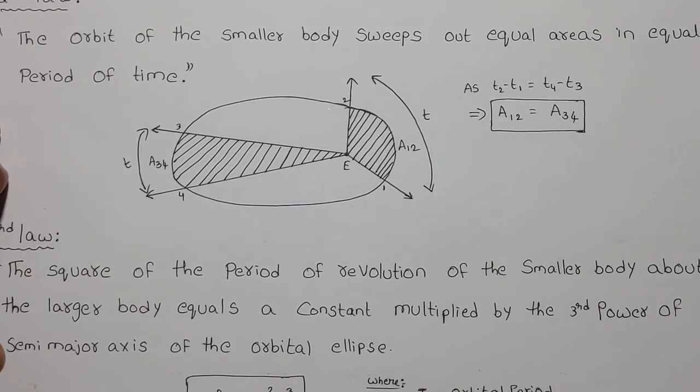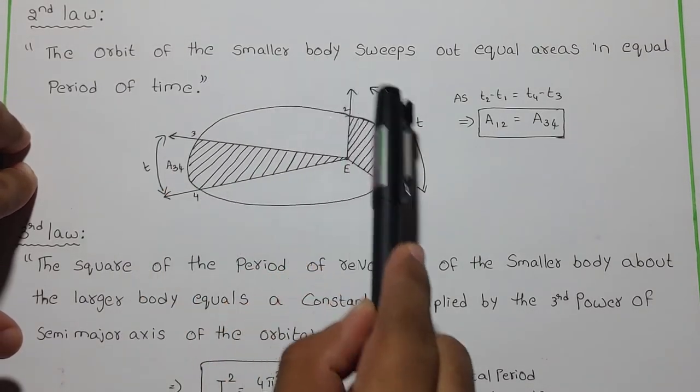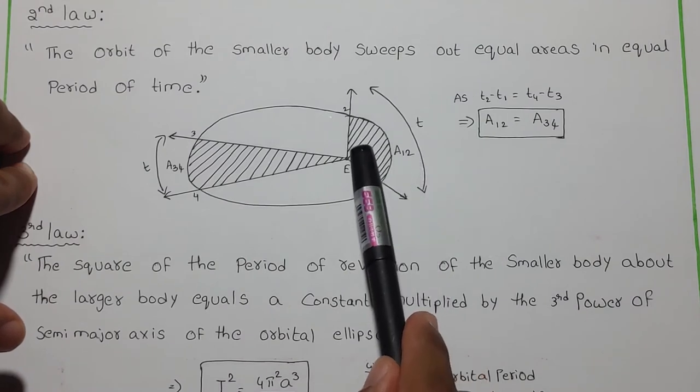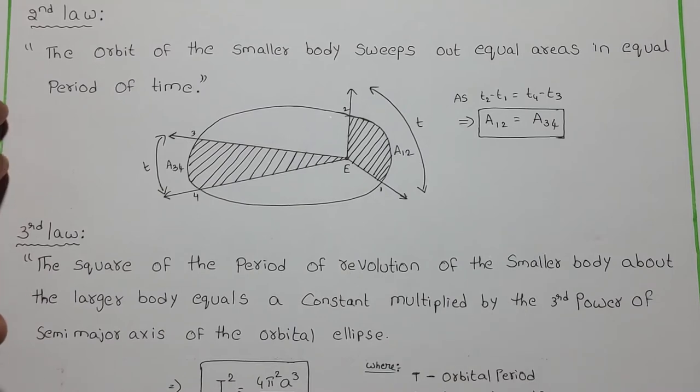This is stated in Kepler's second law as: the orbit of the smaller body sweeps an equal area in equal period of time, which is T and T naught.